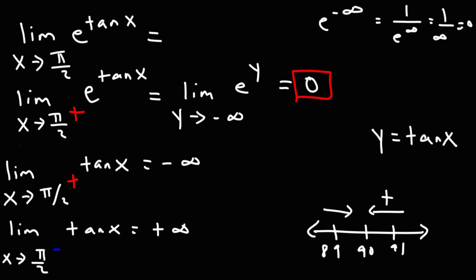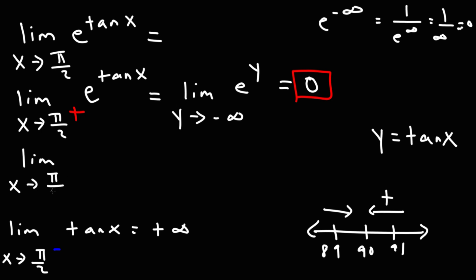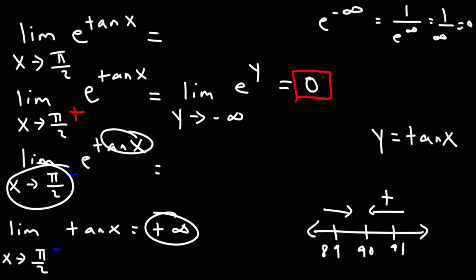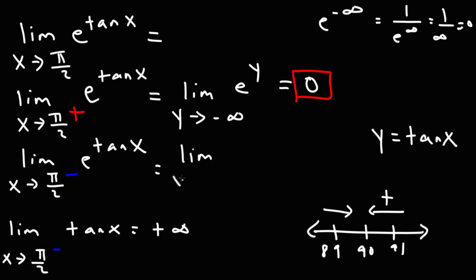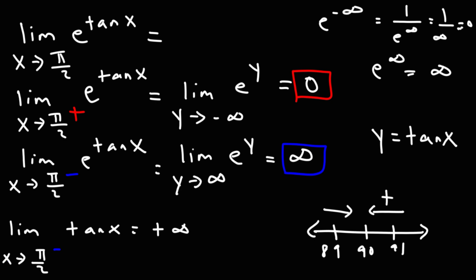Now let's check the left-side limit. The limit as x approaches pi over 2 from the left of e to the tangent x: as x approaches pi over 2 from the left, tangent goes to positive infinity. So we have the limit as y goes to positive infinity of e to the y, which becomes e to the infinity — that's infinity. Notice that the right-side limit is 0 and the left-side limit is infinity — they're not equal to each other, so the limit does not exist.